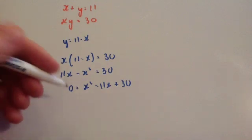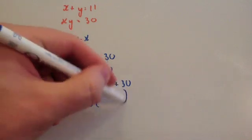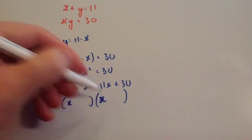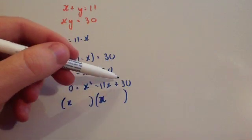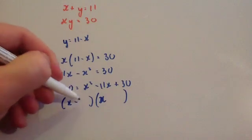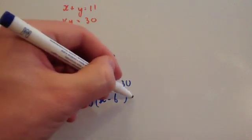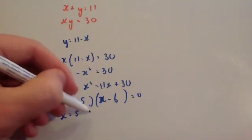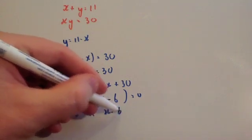Factorizing x squared minus 11x plus 30 equals 0: we need two numbers that multiply to give 30 and add to give minus 11 — that's minus 5 and minus 6. So (x minus 5)(x minus 6) equals 0, giving x equals 5 or x equals 6.